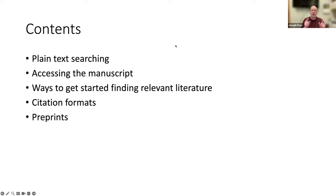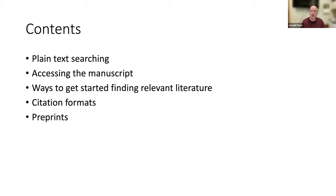Today we covered plain text web searching for research literature, how to actually get the PDF or web-based full text of a manuscript, ways to get started like using Wikipedia or finding review articles, how to read and understand a citation, how to find the full name of a journal from an abbreviated journal name, and preprints. Now you know what you need to get started and continue working with research literature in the biomedical and life sciences. Thanks for watching.